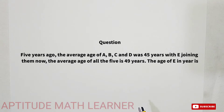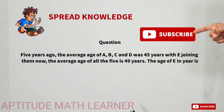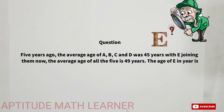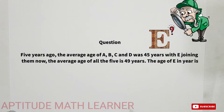Hello and welcome to our YouTube channel Aptitude Matlab. Today's question is related to averages. The question is: five years ago, the average age of A, B, C, and D was 45 years. With E joining them, the average age of all five is 49 years. How old is E?